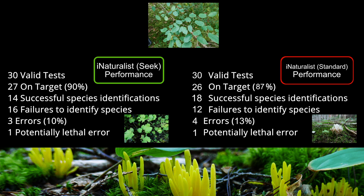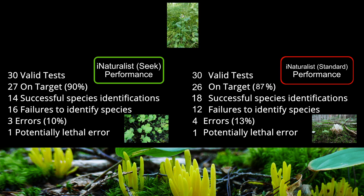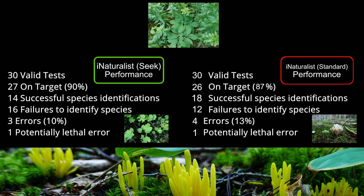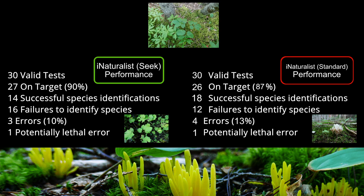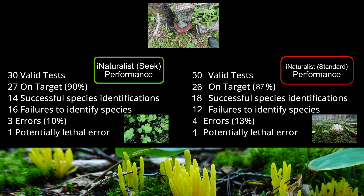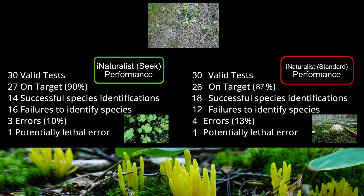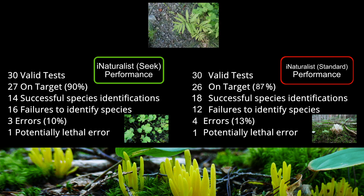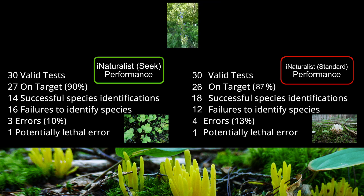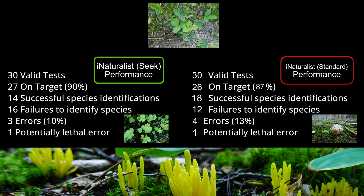So where does this leave us? It leaves us with the same conclusion we drew the last time. Naturalists and foragers must not rely upon identification apps to confirm the identity of whatever plants or fungi they're observing. They may be seen as a starting place, because the majority of the time they are on target. Typically they can place an organism to within family or genera with an okay degree of reliability, and that could save you some time flipping through the pages of a field guide. But both manage correct identification of species only about half the time, and between the two of them they run a nearly 12% average of errors.